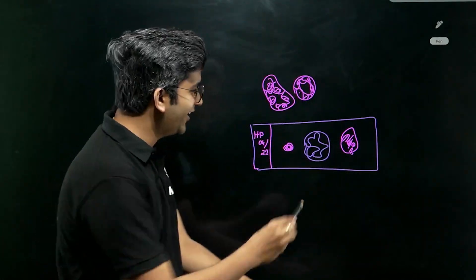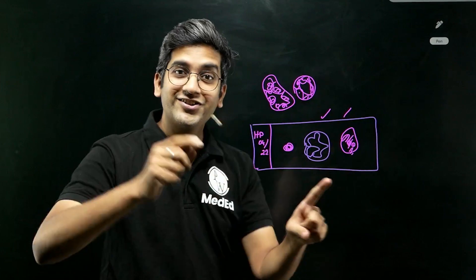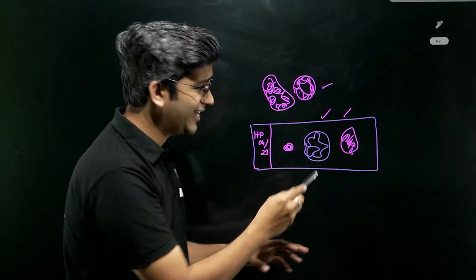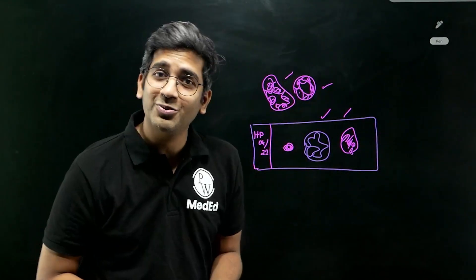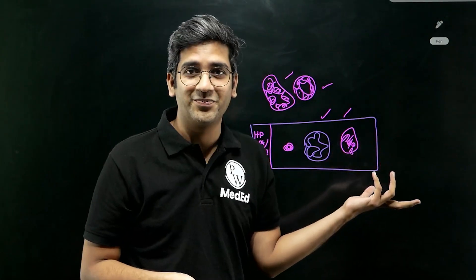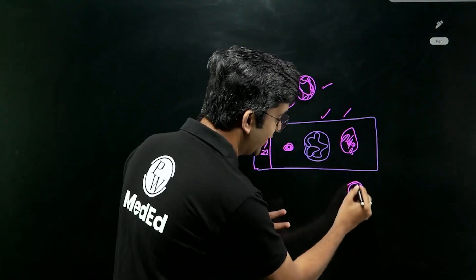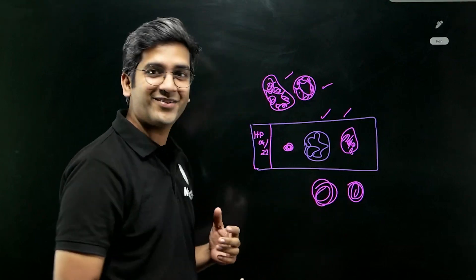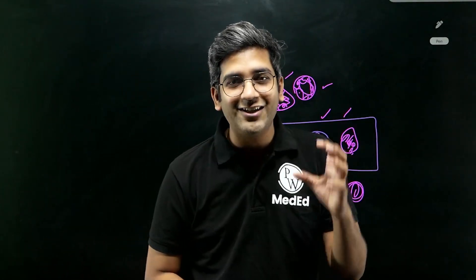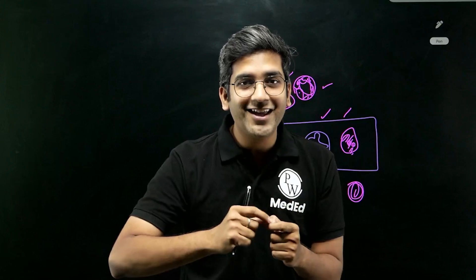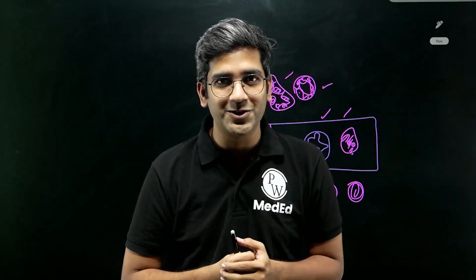At the end of the day, the teacher will say it's a dysplastic gland — looks the same. Normal gland — looks the same. Hamartoma, which we don't even know what hamartoma is — still looks the same. They say it's a keratin pearl — looks the same. They say it's a psammoma body — looks the same. So it's very, very difficult for any undergraduate to ace the art of diagnosis or looking into a microscope in the second year of MBBS.